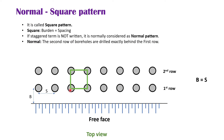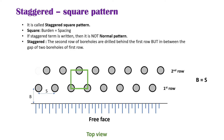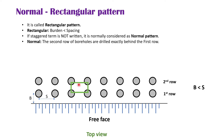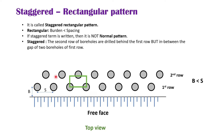In the normal square pattern, the second row boreholes are exactly behind the first row, forming a square shape. In the staggered pattern, the second row borehole is placed in between the gap of the first row. The rectangular pattern has unequal burden and spacing, and can also be staggered, where the second row borehole is offset from the first row.